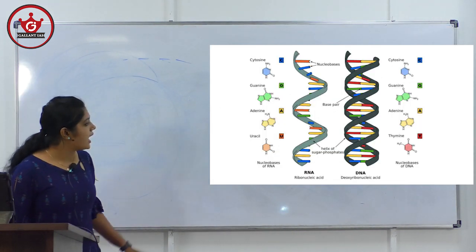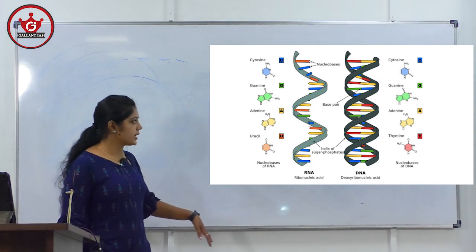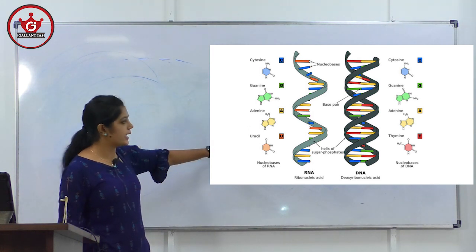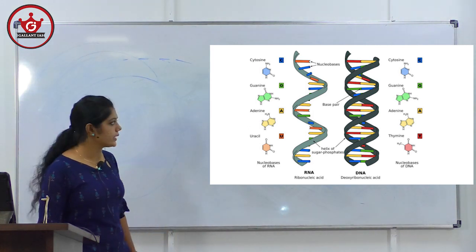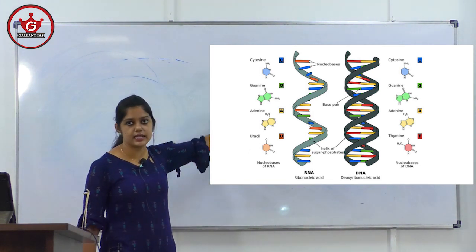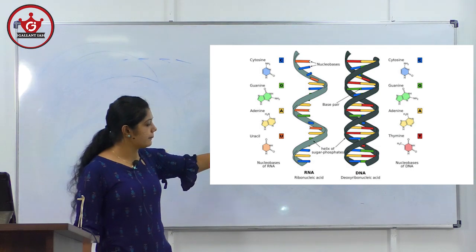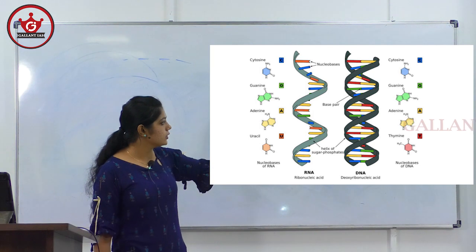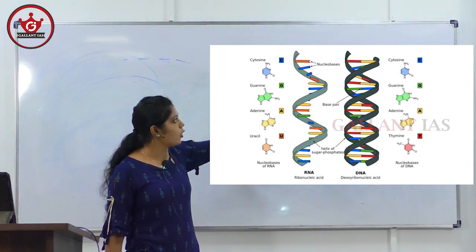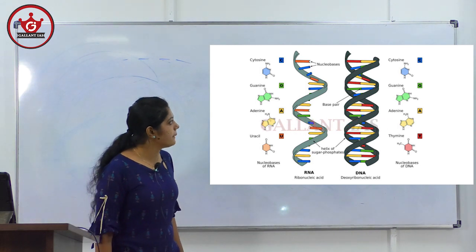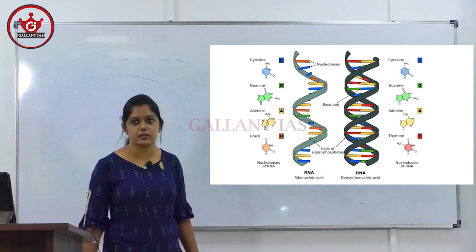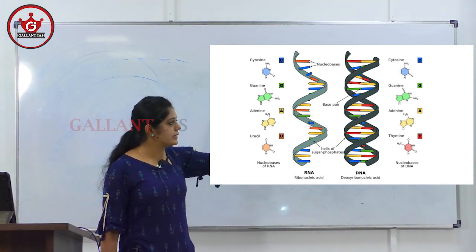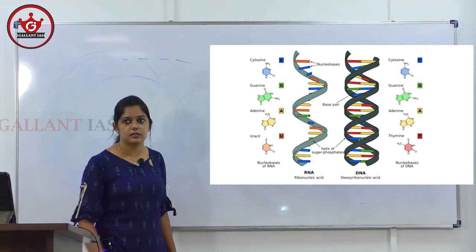RNA and DNA basics: In RNA, the bases are cytosine, guanine, adenine, and uracil (instead of thymine). RNA (ribonucleic acid) is single-stranded. DNA is double-stranded, helix-shaped, with bases thymine, adenine, guanine, cytosine. Adenine pairs with thymine; guanine pairs with cytosine. In RNA there is no thymine — uracil replaces it.